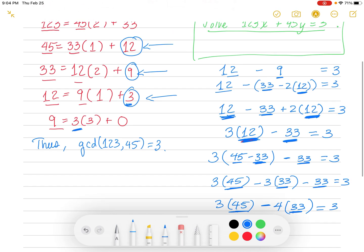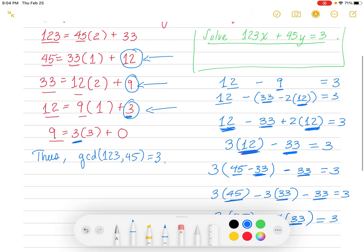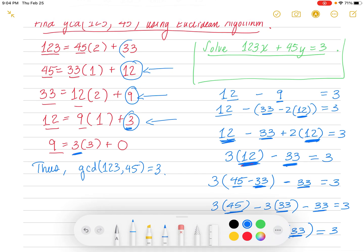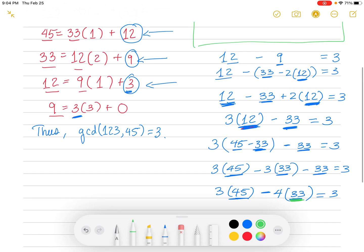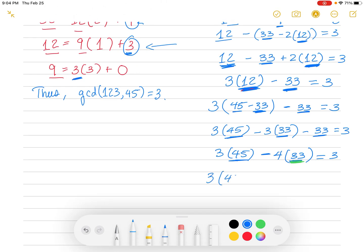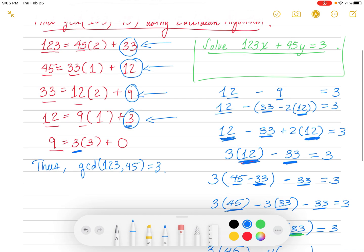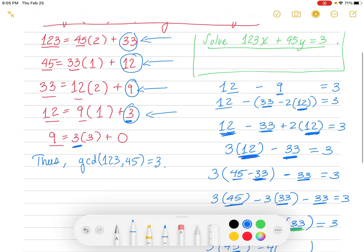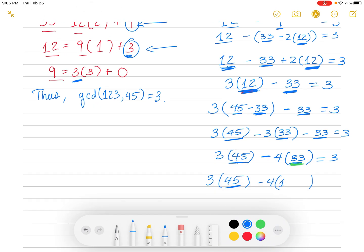I look at my 45 and my 33, those are my underlined numbers, and see are they my originals. Well, I got 45, that's my B. However, 33 is not original. So we want to replace 33. We're going to go to the very top, where the remainder here was 33, and we're going to replace this 33 with 123 minus 2 times 45 from the top equation. We're going to have 3 times the 45 minus 4 times 123 minus 2 times 45. This is all equal to 3.